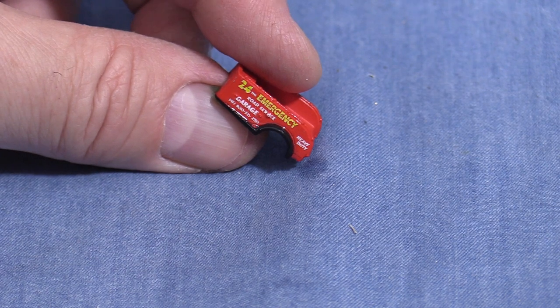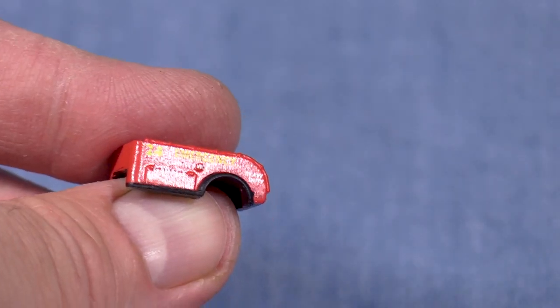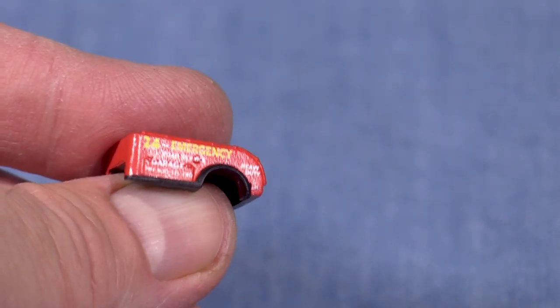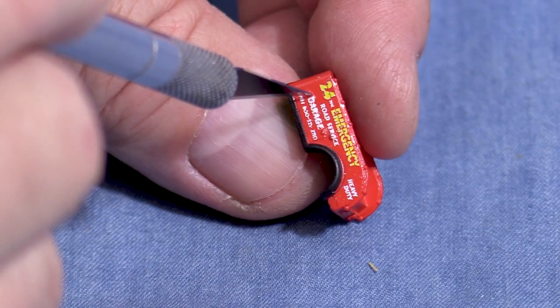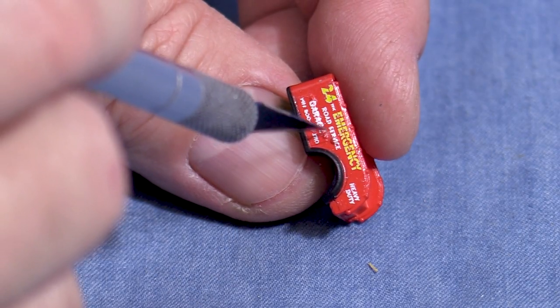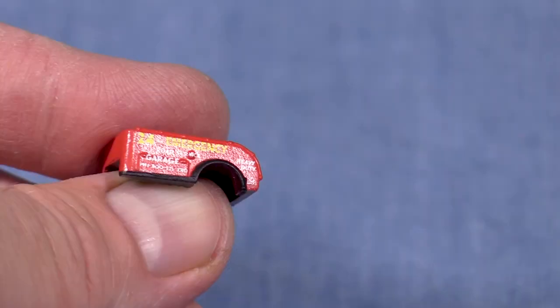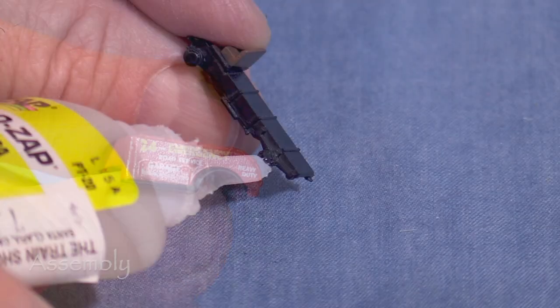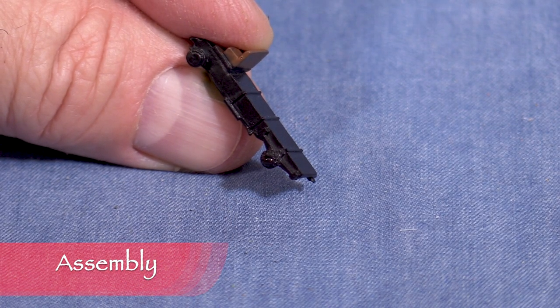Don't try to move the decal after applying the Microsol. Holding the model up to the light is a good way to check the decal for bubbles or silvering. If there were any bubbles, they could be poked with the tip of a hobby knife before applying more Microsol. This is looking pretty good now. Now that the decals are done, I can assemble the model.